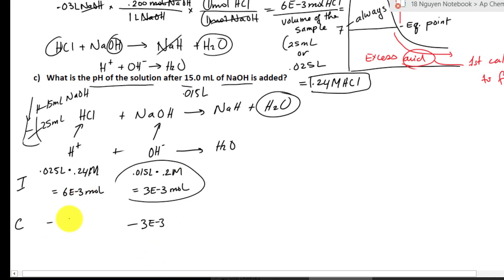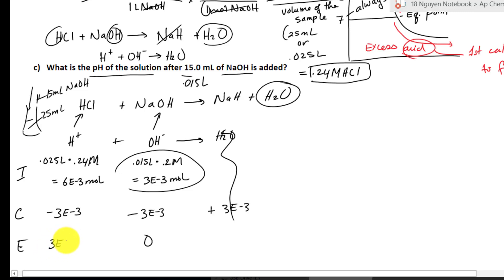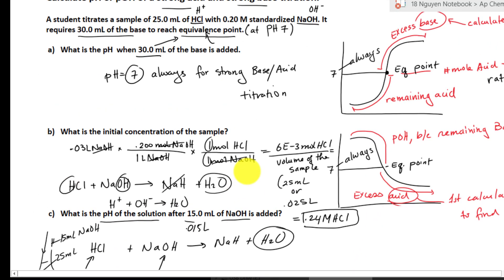The same amount subtracts from the acid side: minus 3 × 10⁻³. On the reactant side we use it up, that's why we subtract. On the product side we have plus 3 × 10⁻³, but we don't care — that's water. We only care about H⁺ and OH⁻ because that's what determines pH and pOH. At equilibrium, the OH⁻ is 0, but the H⁺ is 6 × 10⁻³ minus 3 × 10⁻³, which gives us 3 × 10⁻³ — the leftover remaining acid.